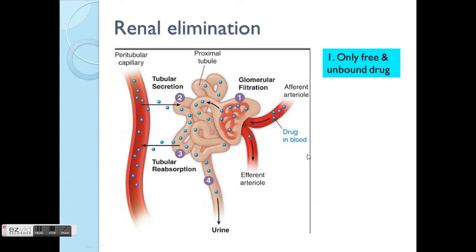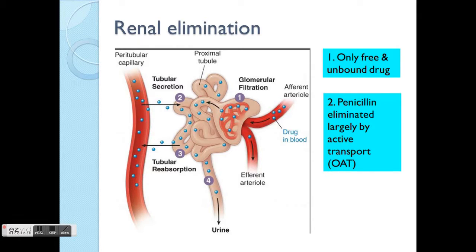There are a few main concepts here. First, only free and unbound drugs can go through the glomerular filtration process. Remember when we talked about binding of drugs with plasma proteins in the distribution section — drugs bound to plasma proteins are larger in structure, so they cannot easily move into different sections of the body. Only free and unbound drugs, which are small enough, can actually go through the glomerular filtration process.